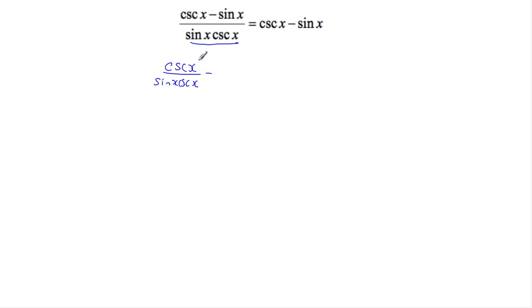So we're going to have cosecant of x over the denominator minus sine of x over the denominator. And of course this should equal cosecant of x minus sine of x. Here cosecant and cosecant cancel. Sine and sine cancel. So I'm left with 1 over sine of x minus 1 over cosecant of x. So this is cosecant of x minus 1 over the cosecant which is sine. And so this equals cosecant of x minus sine of x. So there we go.